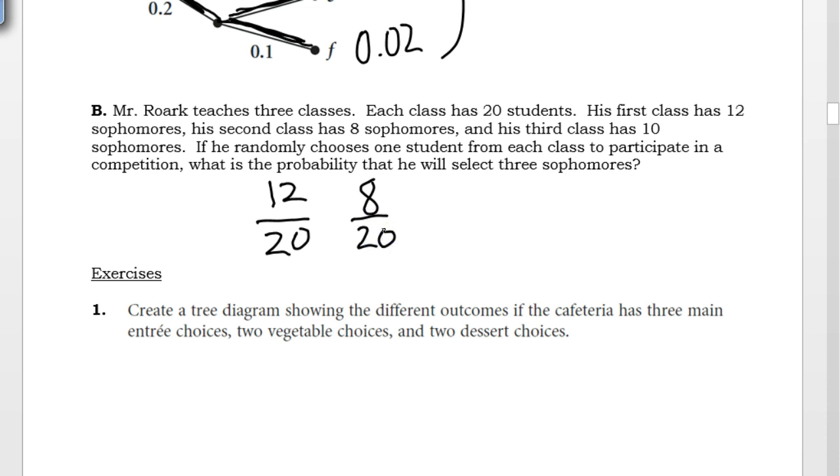The probability that third hour selects a sophomore is 10 out of 20. Now the probability that all three happen is the probability of the first times the probability of the second times the probability of the third.